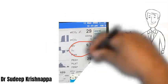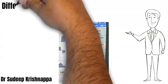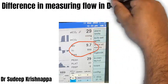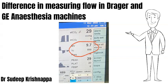However, these anesthesia machines also measure another set of flows which are intermittent in nature — that is, the output from the ventilators. Because this flow is intermittent, we need a different mechanism to measure these flows. Welcome to this episode of the doodly, wherein we will be looking at how these ventilator outputs are measured in the GE and Drager machines.